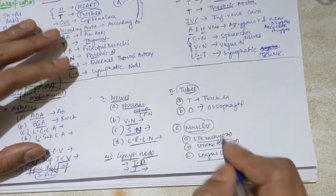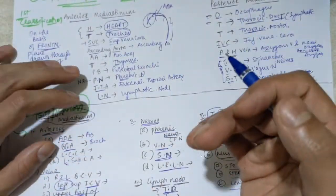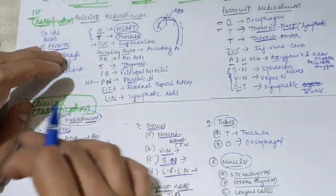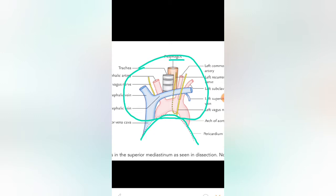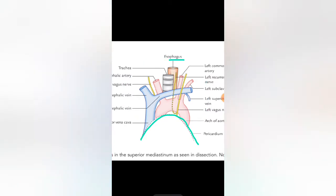In the lymphatic section, you will see the thoracic duct and thymus. The thoracic duct extends from the superior down to the posterior side, so it can be seen in both the superior and posterior mediastinum. For tubular organs: trachea and esophagus. Some muscles are also present — sternohyoid, sternothyroid, and longus colli. All these structures will be visible and related in the diagram. Let's move on to the diagram to discuss the superior mediastinum specifically.